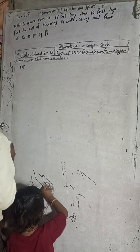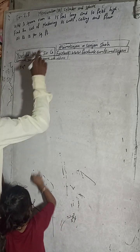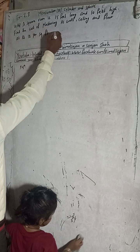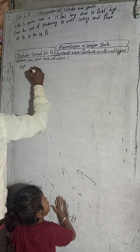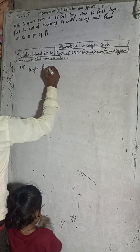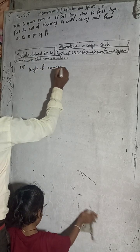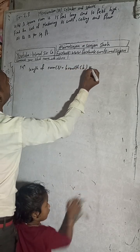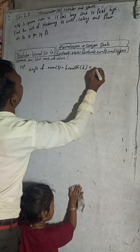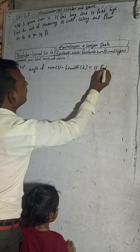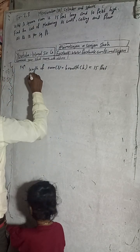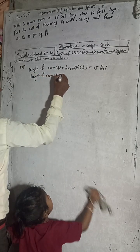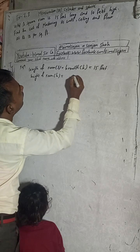A square room is 15 feet long and 10 feet high. Find the cost of plastering its walls, ceiling, and floor at a rate of 18 per square feet. So here, since it is a square room, length L is equal to breadth B, which is 15 feet. And the height H of the room is equal to 10 feet.